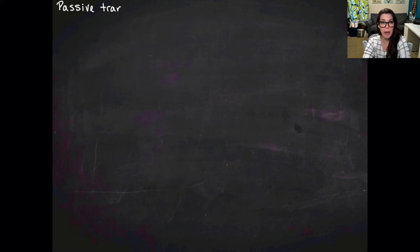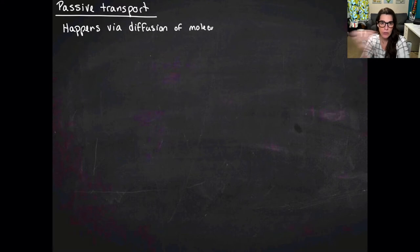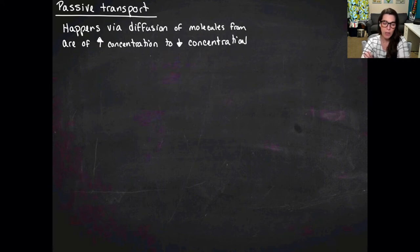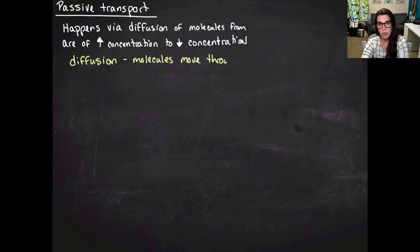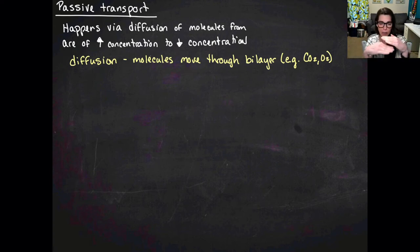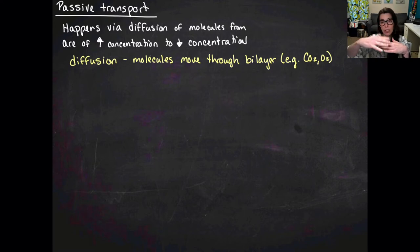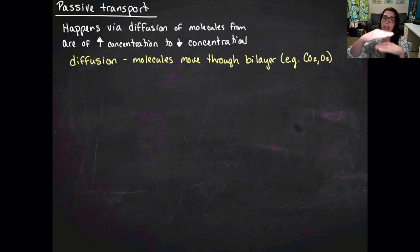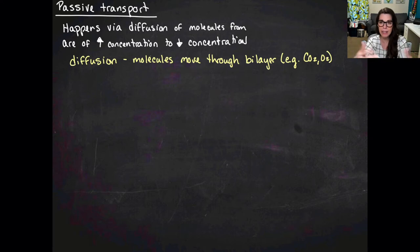Let's start with passive transport. Passive transport happens via the diffusion of molecules from areas of high concentration to areas of low concentration. The basic form is simple diffusion, where molecules move through the bilayer from high to low concentration. For example, carbon dioxide at high concentration inside a cell can diffuse through the phospholipid bilayer to the lower concentration in the interstitial fluid, reaching equilibrium. Molecules must be small and non-polar.